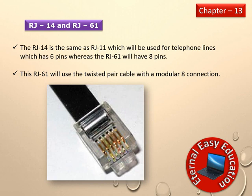Next are RJ14 and RJ61. RJ14 is similar to RJ11 and used for telephone lines, having six pins. RJ61 has eight pins and uses twisted pair cable with a modular 8 connection. The image shown here is an example of RJ14.